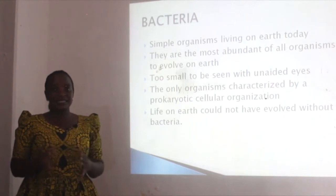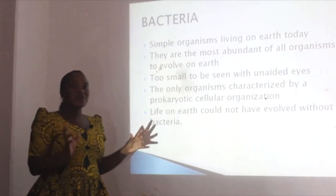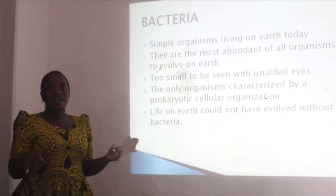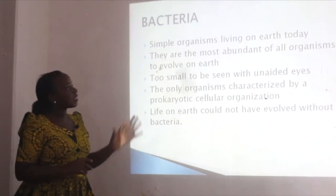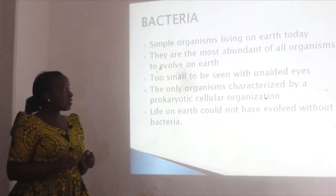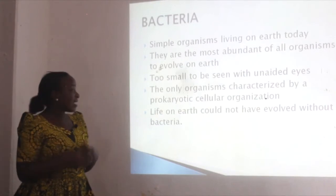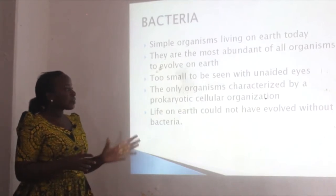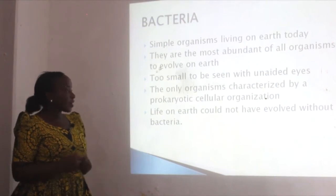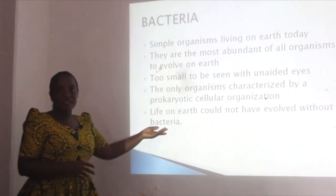Another group is bacteria. Bacteria are simple organisms and the most abundant of all organisms to evolve on earth. They can be found in all types of habitats — in water, in the air, and in the soil. We cannot see bacteria with our unaided eyes. They are the only organisms characterized by prokaryotic cellular organization — they have prokaryotic cells, and that's why they are called prokaryotes.